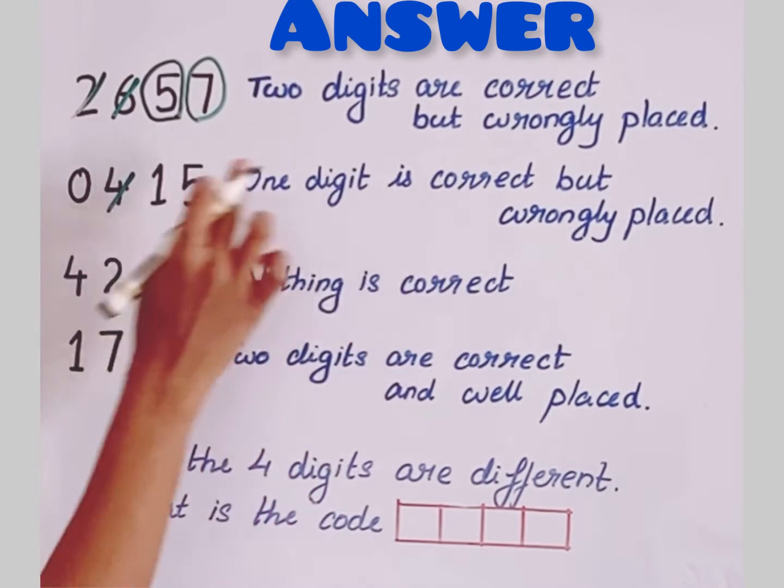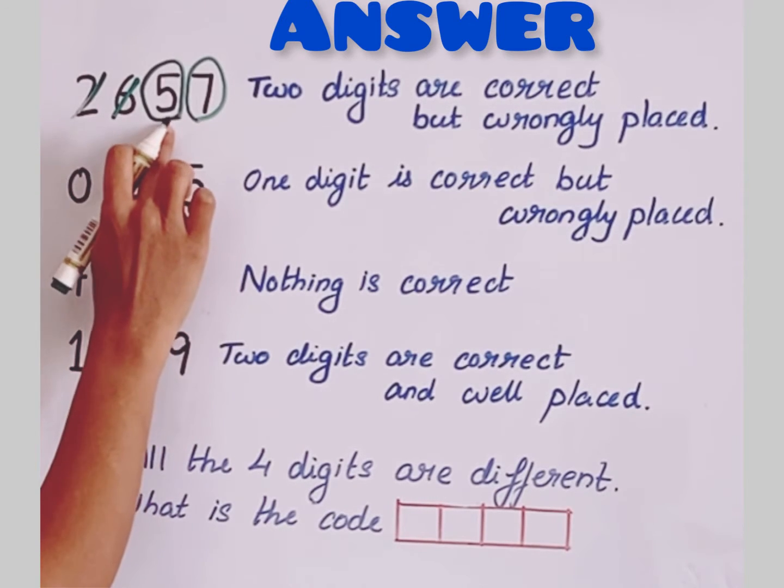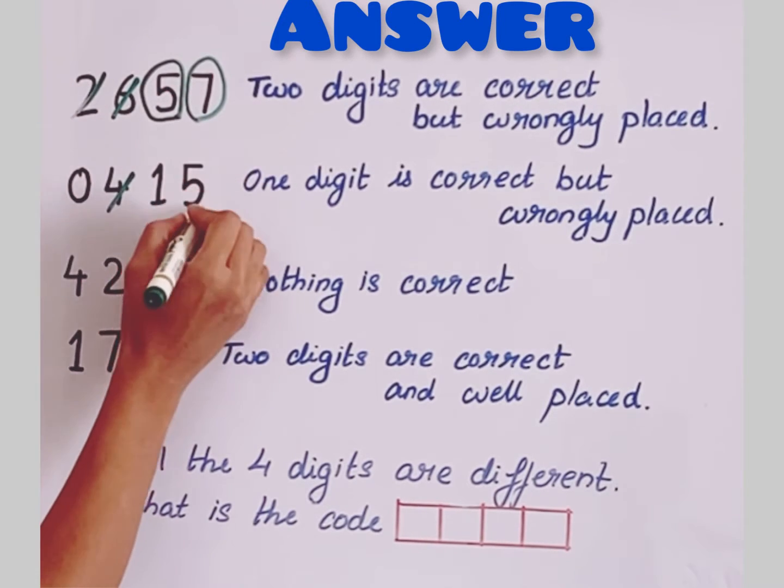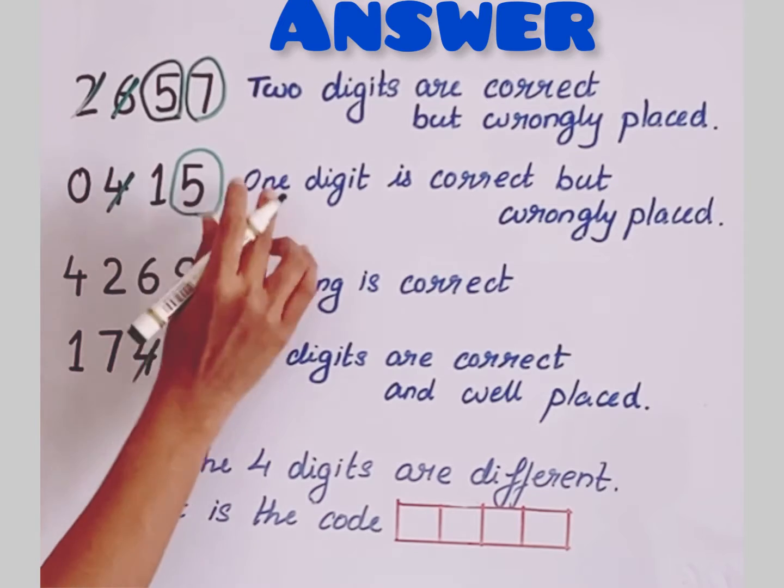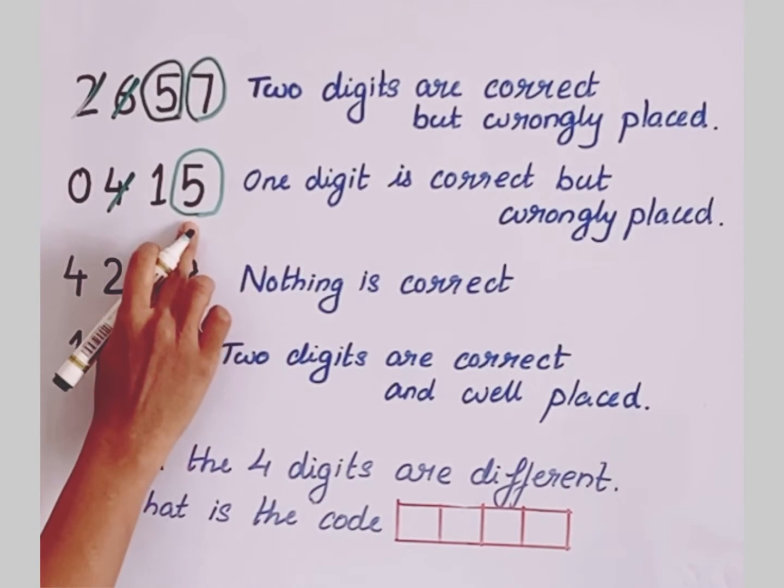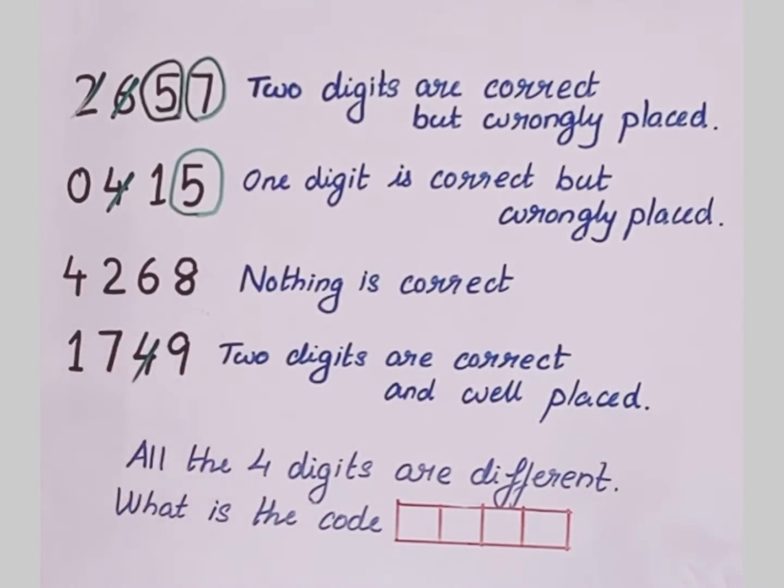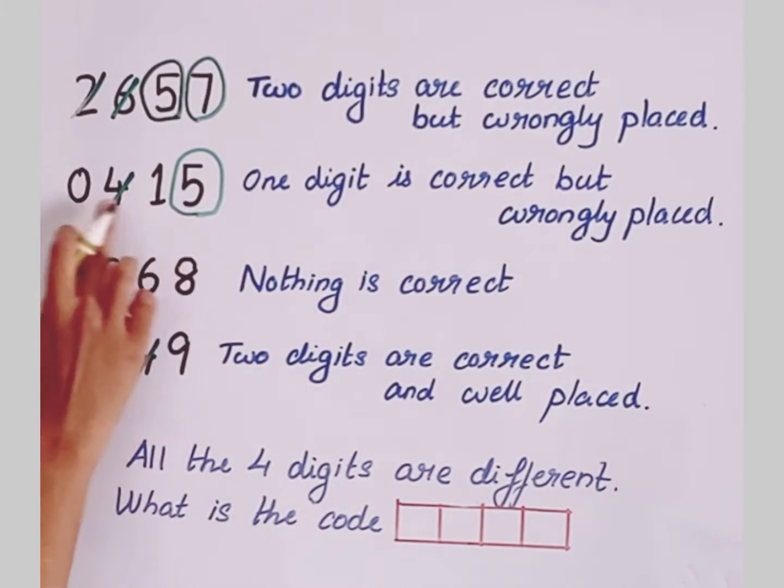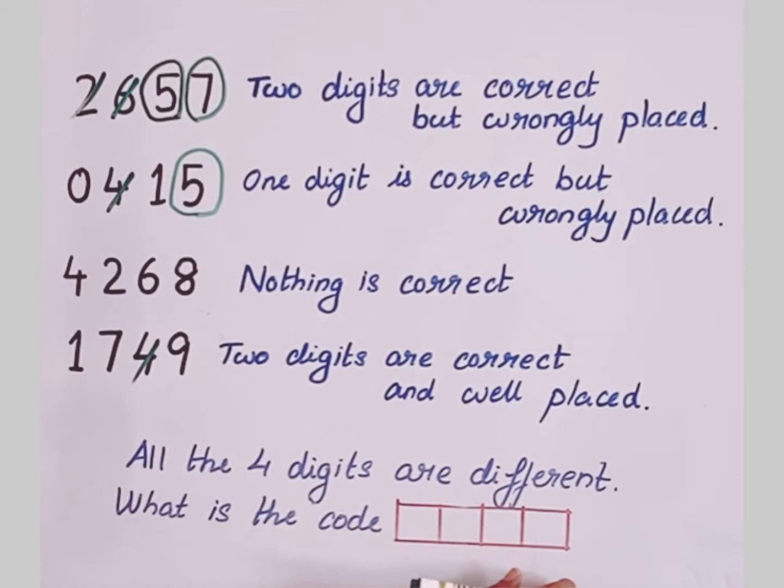One digit is correct and that is 5, which we have identified before. So 5 is the correct digit. One digit is correct which is 5. As it is wrongly placed, let's move on. And before that, here the remaining two digits, they are not in this code. So these are wrong digits. 0 and 1 will be the wrong digits - cancel it.